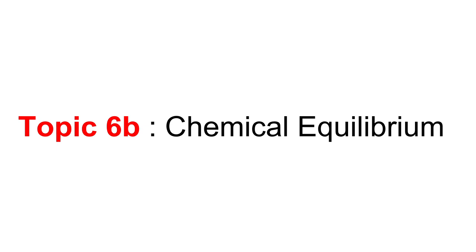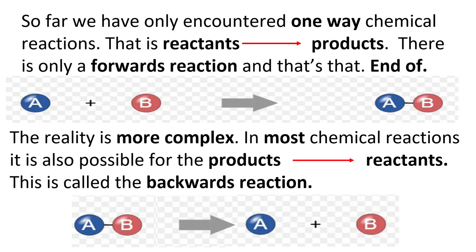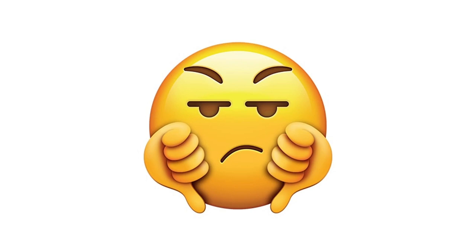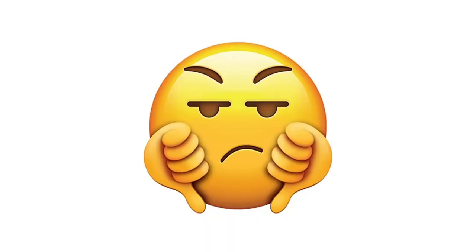Now on to Topic 6B: chemical equilibrium. What is chemical equilibrium? It is when there is a backwards reaction as well as a forwards reaction. So far we've only encountered one-way reactions where reactants make products. But it is also possible for the products to break down back to the reactants — this is called the backwards reaction. In general that's undesirable. Chemical equilibrium is about making the forward reaction go and reducing the backwards reaction.